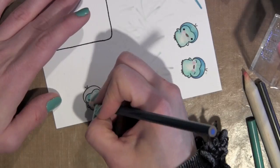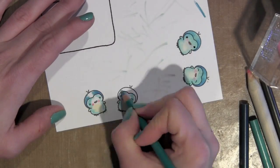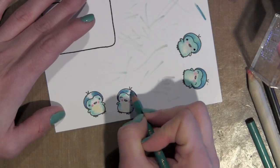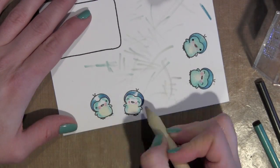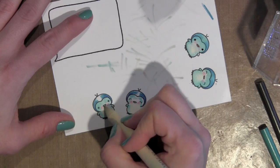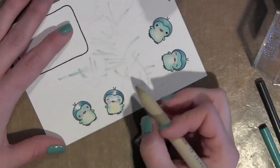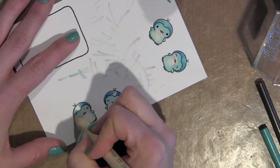The stamp set is adorable. It has these two cute little birds, a couple of speech bubbles with both an outline and a solid one, and several different greetings that coordinate with the stamp set.